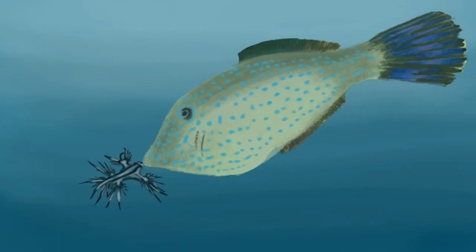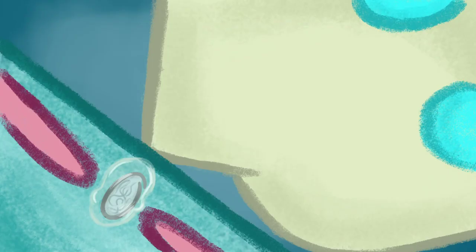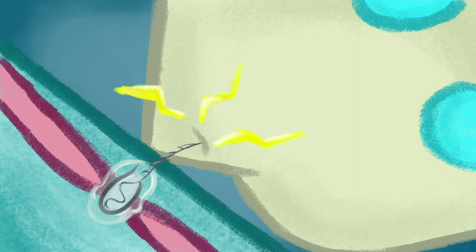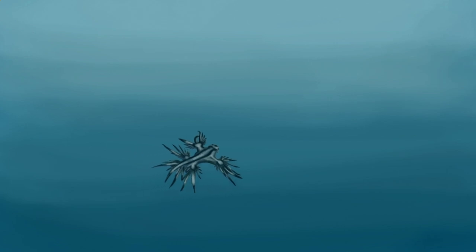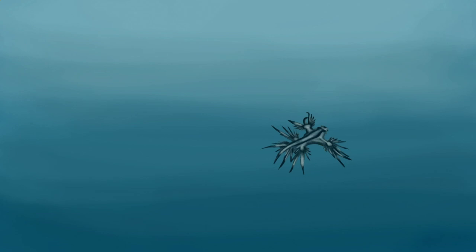When threatened by a predator, a nudibranch squeezes its muscles around the stinging capsule, discharging the capsule and giving the predator a sharp sting. Despite their harmless appearance, nudibranchs resourcefully use their prey to keep their predators away.